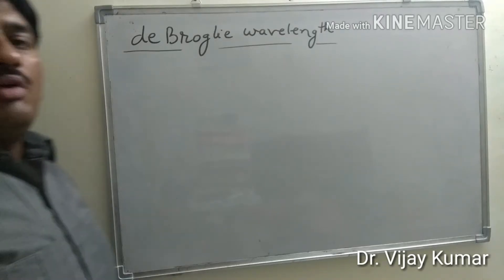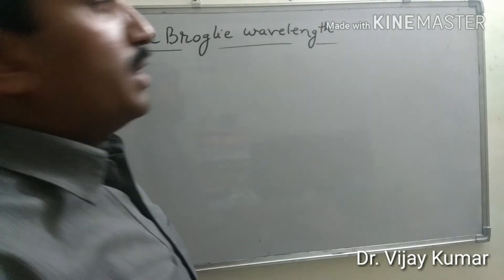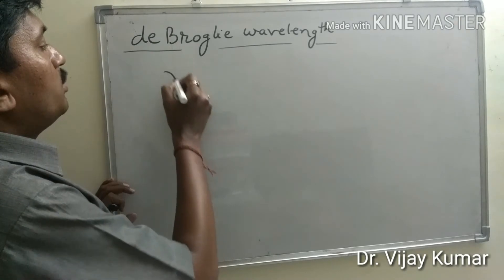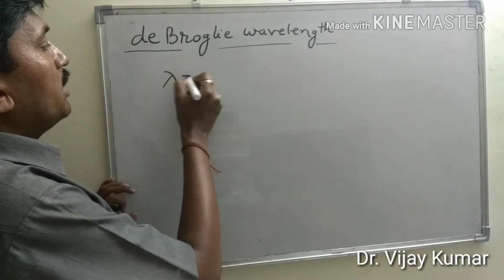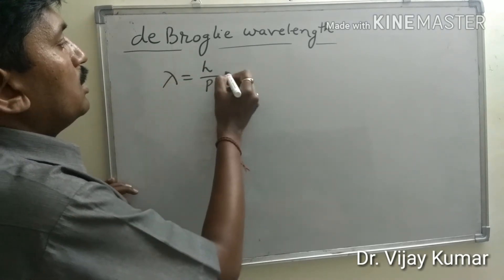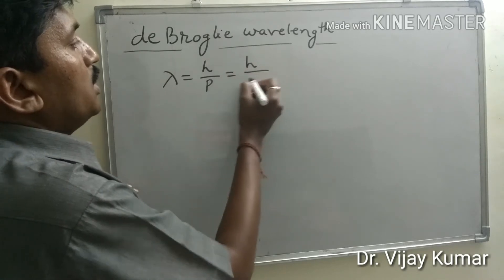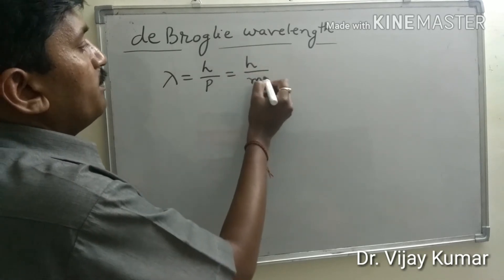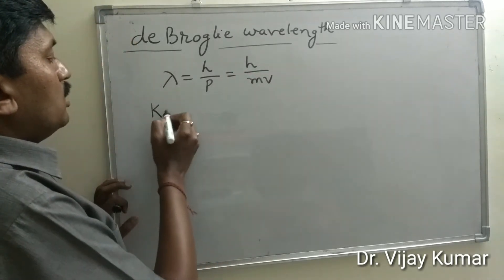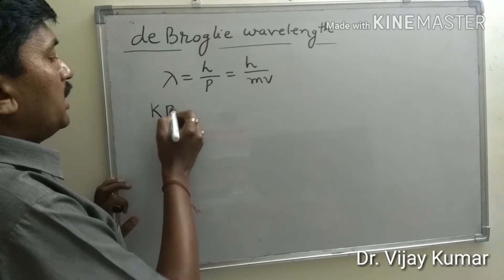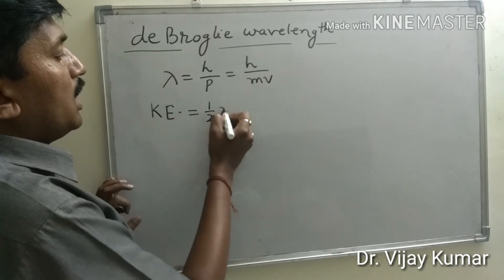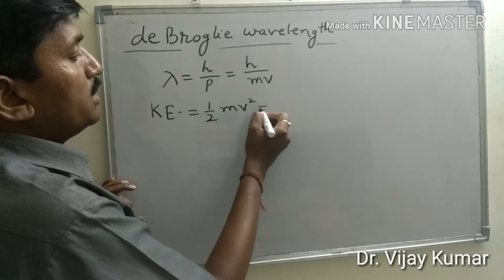Now we determine the de Broglie wavelength of a particle. We know that the de Broglie wavelength is lambda equal to h upon v, or h upon mv. The kinetic energy of the particle we can represent as half mv squared.